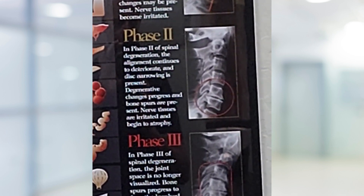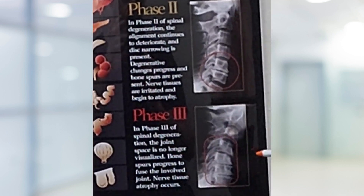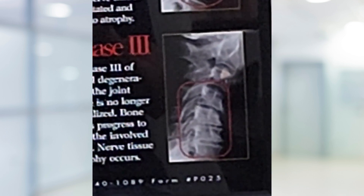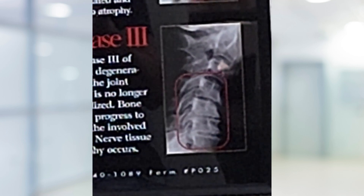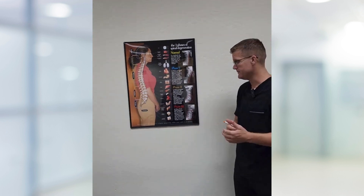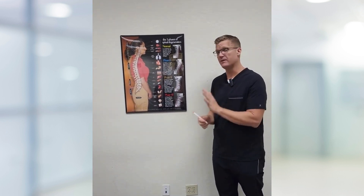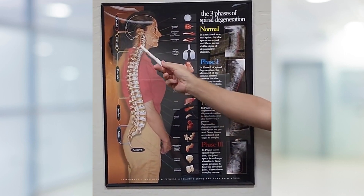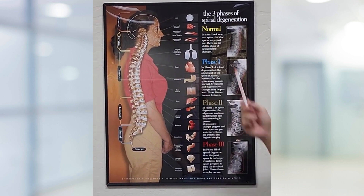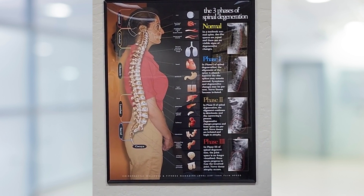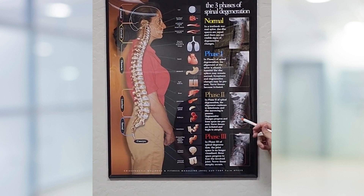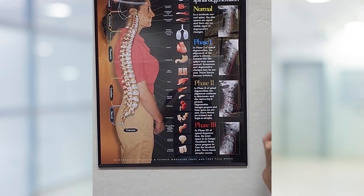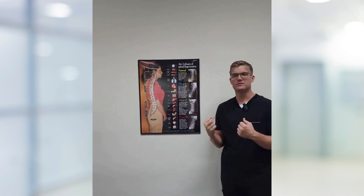The third phase is when we lose all sight of those disc spaces, where we're starting to see the spine fuse and kind of grow and intermingle together. This causes a lot more nerve irritation, and we also start to see atrophy downstream. This chart tries to point out that the nerves coming out of the spine are important and control other tissues and functions in the body. For example, a phase two degenerative disc at C5-C6 could cause problems in the arm, weakness, atrophy, and inability to use the muscles the proper way.